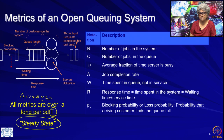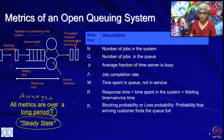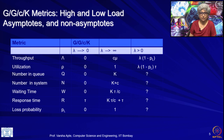Steady state is when the system is not changing much anymore: the arrival rate is at some stable rate, the service rates are stable, the number of servers does not change, and the buffer size does not change. These parameters of the system do not change, and there are no start or end effects. Steady state means you are just observing the system over a long time.